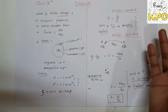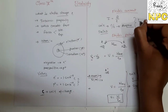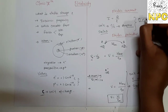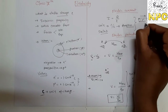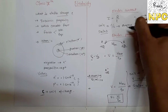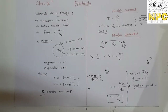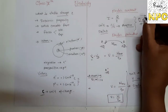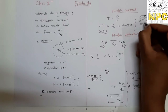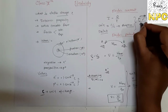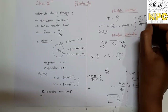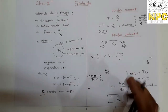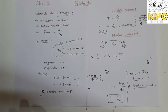One more point: if electrons flow in a conductor in one direction, the conventional electric current flows in the opposite direction. So electric current direction is always opposite to the direction of electron flow.